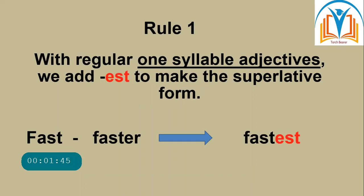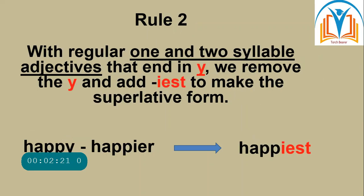Rule one: with regular one-syllable adjectives, we add -est to make the superlative form. Look at the example: fast is a single-syllable adjective. Fast, faster, and fastest. Fastest is the superlative form — we added -est.